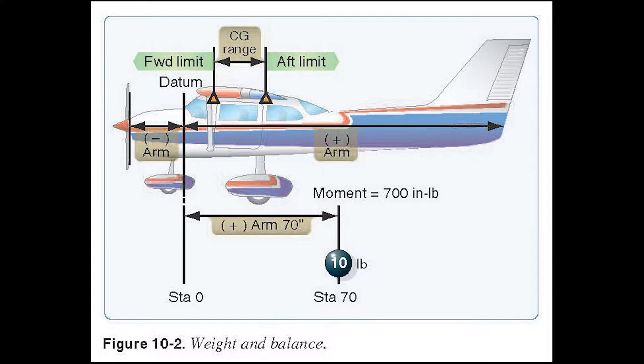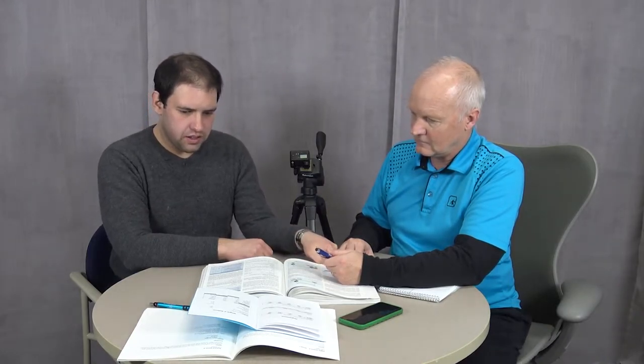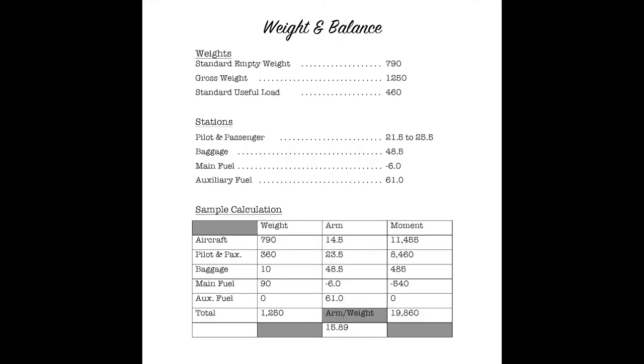Do you know what it is on the Chief? On the Chief, I believe it's the front of the prop spinner, the very front of the airplane. Whoa, they go way up front. Actually, let's see. Main fuel negative six inches. So it looks like the datum point on the Chief is just ahead of the instrument panel, maybe the front of the wing. I'd have to look at the weight and balance sheet for the Chief to see what the datum point is, but I believe it's right around there, the front of the wing. That'd be a good spot. Yeah, the landing gear or something.